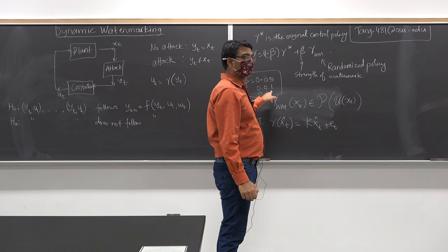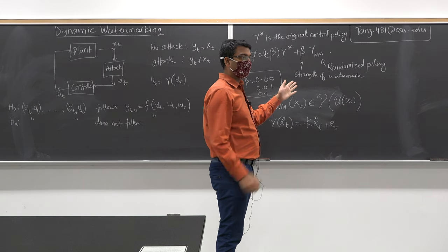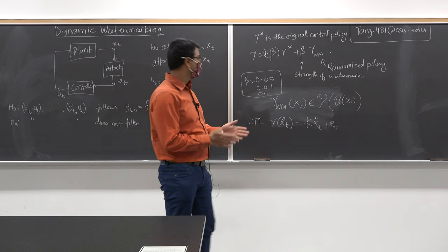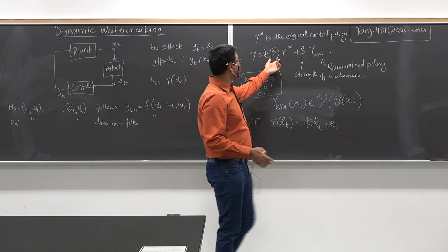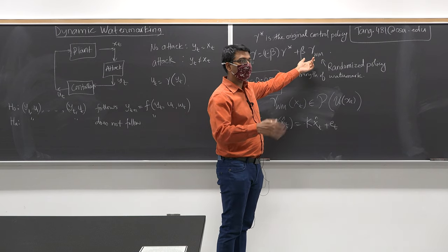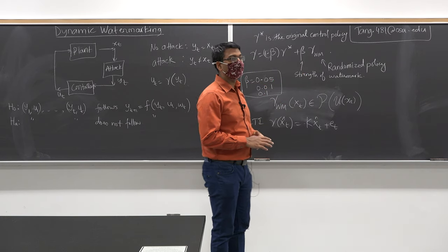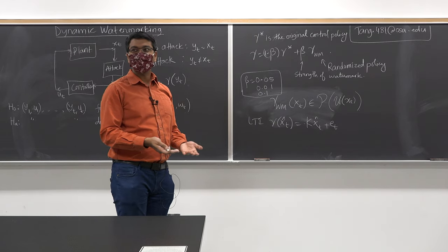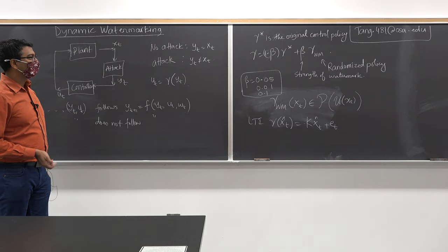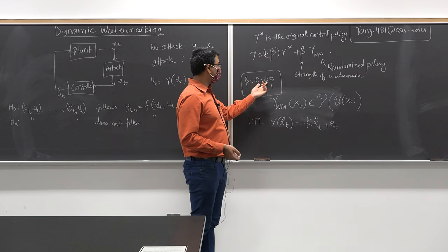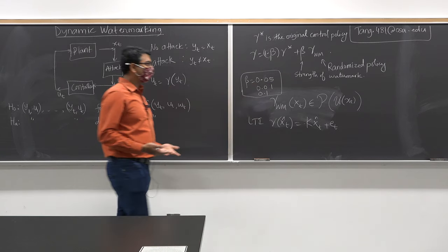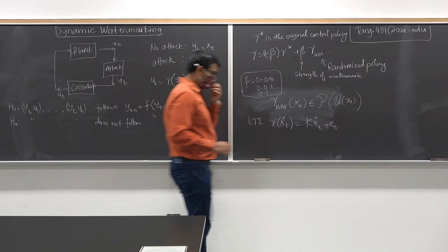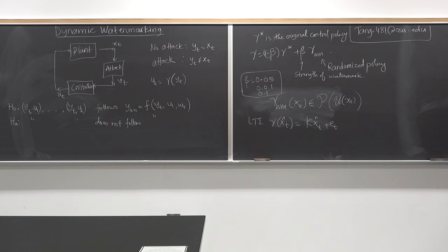How do we determine the value of beta? It's trial and error based on your constraints on mean time between false alarms and mean delay. If you want a small mean delay, you pick a large beta. But then you are not really controlling — you are just randomly changing the control signal. If you randomly pump cold air into this room, you are not controlling the system. So the strength of the watermark has to be small, but you still need a reasonable number so you can detect an attack quickly. That's the trade-off.